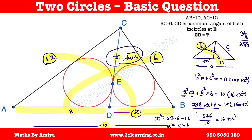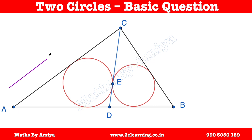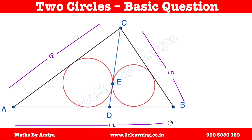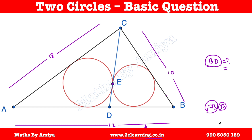Now for homework: data given — this side is 18 units, this one is 18 units, this one is 10 units, and this length AB is 12 units. Find the length of BD, with all the same conditions: CD is the common tangent at E for both incircles. Post your answer in the comments. Please join our Facebook or Telegram group, or follow the link to join the course. God bless you, happy learning, bye bye.